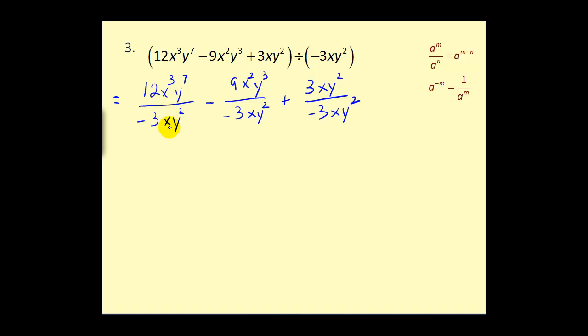So now we need to simplify each fraction individually, so the first step, we'll look at the coefficients, twelve divided by negative three equals negative four, x to the third divided by x to the first, that would be x squared, y to the seventh divided by y to the second, y to the fifth.